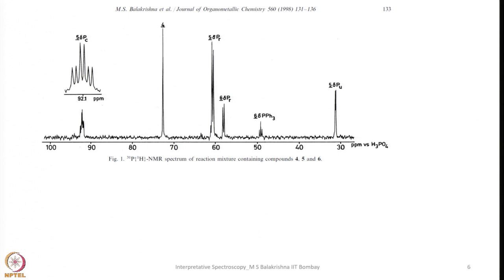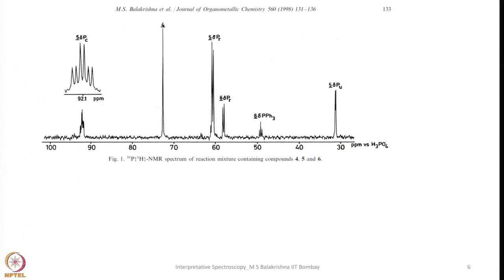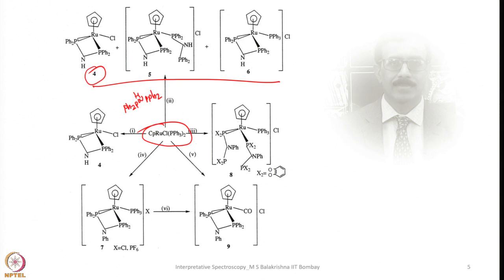Several chemical shifts are present. If you recall, in the first compound 4, both triphenylphosphines are replaced by the bisphosphine, so both phosphorus environments are identical. As a result, one can expect a single resonance, and this signal is assigned to product 4.